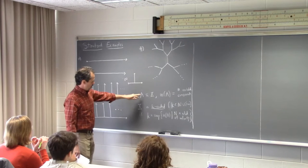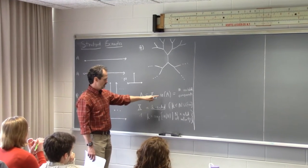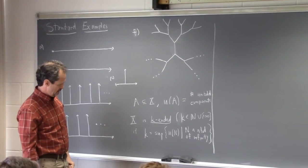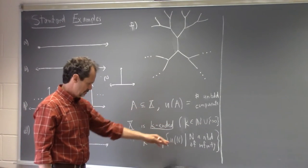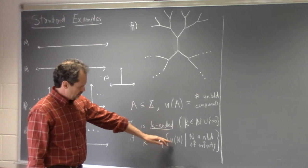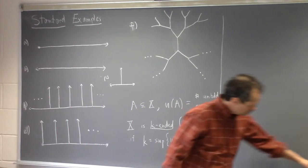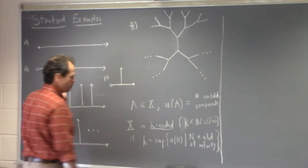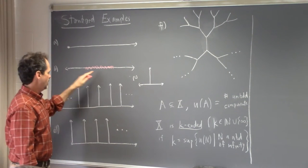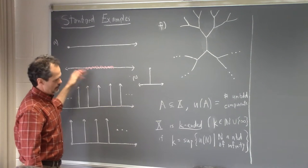One of the crucial definitions from last time: if you take any subset of your space X, you can count up the number of unbounded components — we call that u(A). We defined a space to be k-ended, where k is possibly infinity, as the supremum of u(N) where N is a neighborhood of infinity. A neighborhood of infinity is what you get when you take a compact subset and look at its complement. In this example the neighborhood of infinity has two unbounded components, so u of that neighborhood is two.